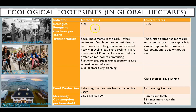Let's compare two Western world countries to see what might influence the differences in ecological footprint. The Netherlands has an ecological footprint of 5.28 global hectares per capita, compared to the United States with an ecological footprint of 12.22 global hectares per capita. What might influence these differences?